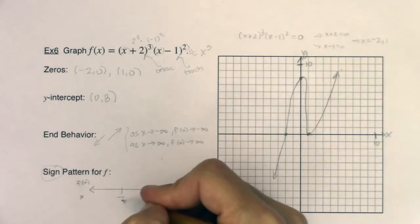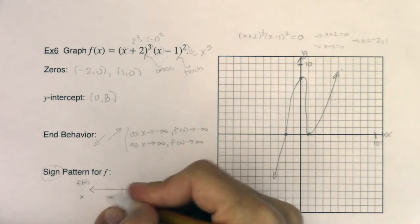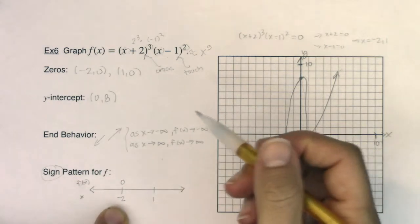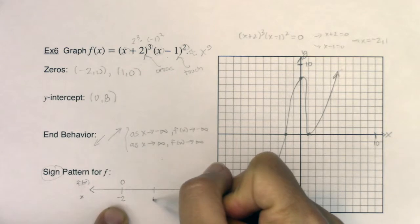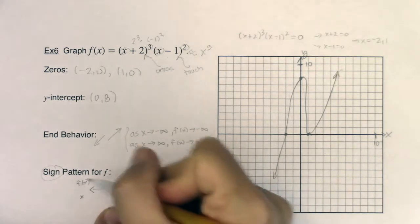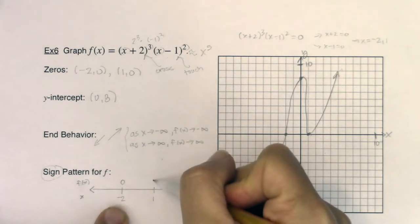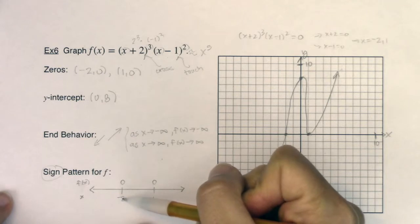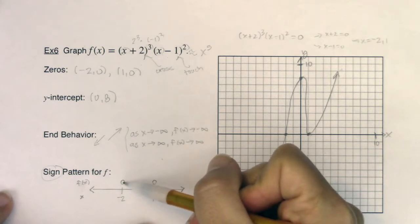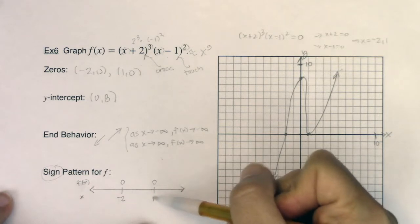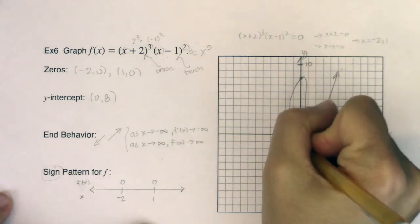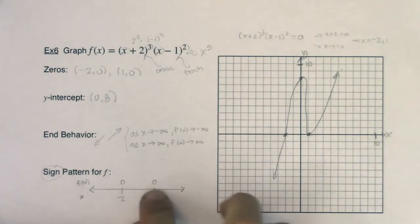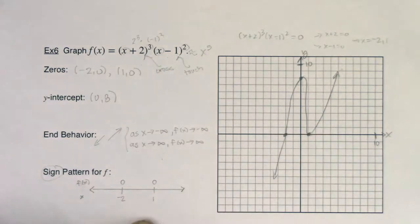Now, when x is negative 2, if you're below this little tick mark, when x is negative 2, what is f of x equal to? Well, we know it's equal to zero. That's how we found that number. When x is equal to 1, when you're on the bottom side of this number line, what is f of x equal to? Well, it's equal to zero. So this is your sign pattern way of saying you have an x-intercept. When x is equal to negative 2, your y-value should be zero. When x is equal to positive 1, your y-value should be zero. And graphically, we see those as x-intercepts on our graph. So here's a sign pattern way of looking at x-intercepts. Here's the graphical way.